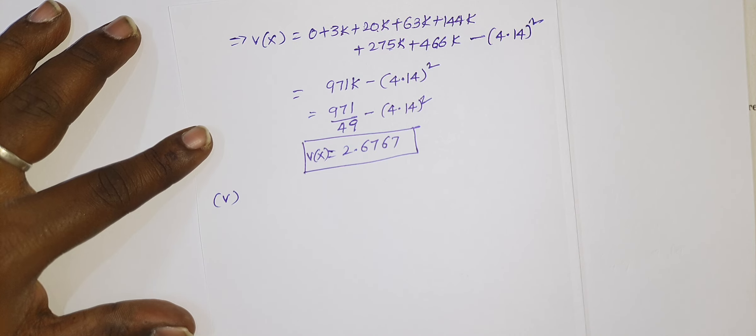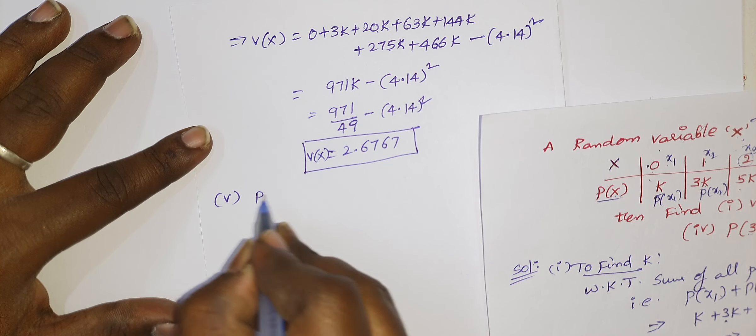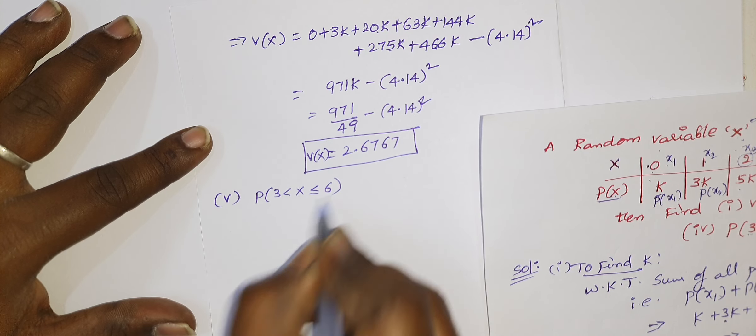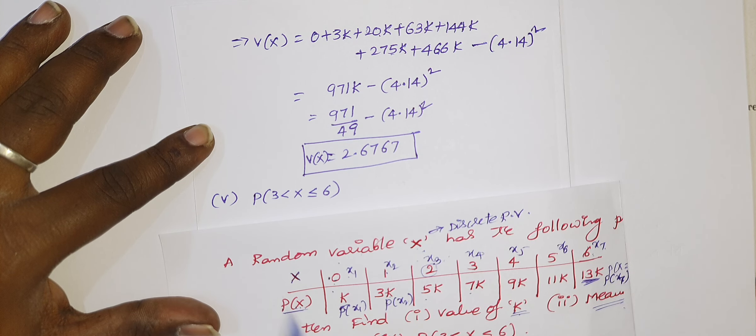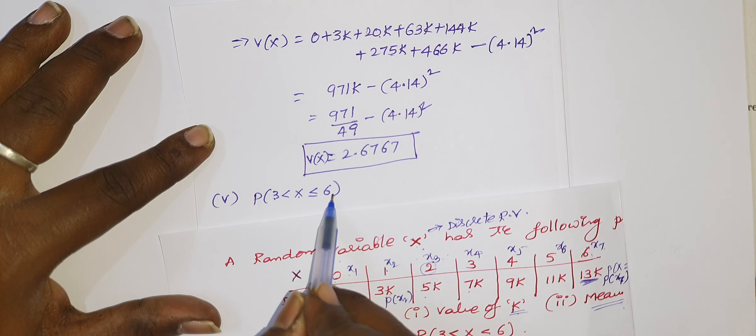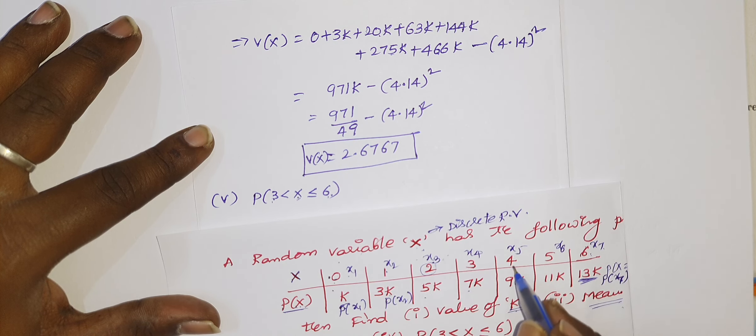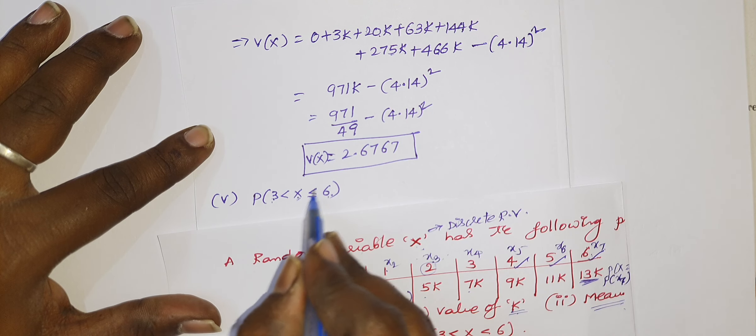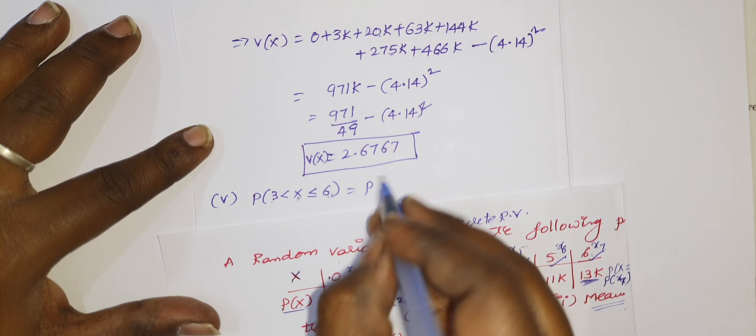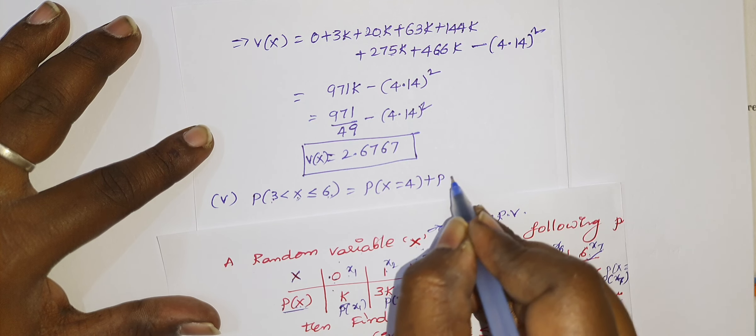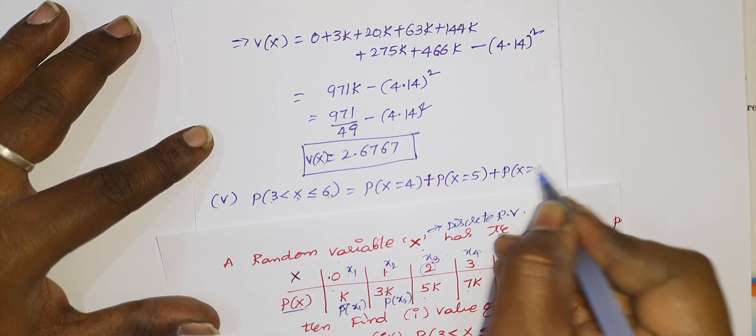Now we have to find out the probability of 3 is less than x is less than or equal to 6. 3 is less than x is less than or equal to 6. So look at the given data once. Here x takes the values from 0 to 6. So there is a chance that x value lies between 3 and 6 and x may be equal to 6. Clearly, we are observing that x value should be greater than 3. So it may be 4, it may be 5, it may be 6 also. Suppose strictly less than is given to you, you have to take that x value is 4, otherwise x value is 5.